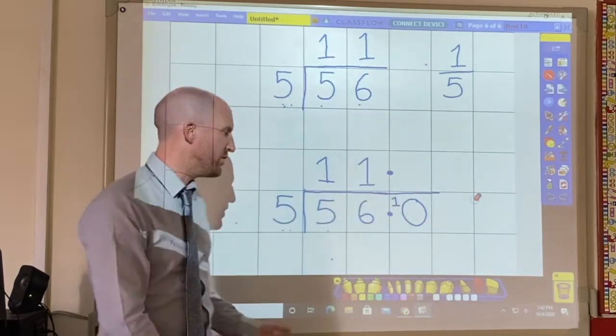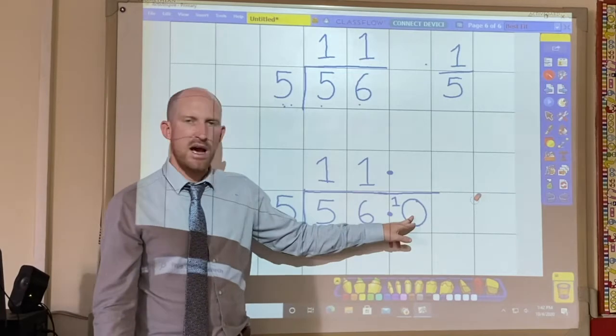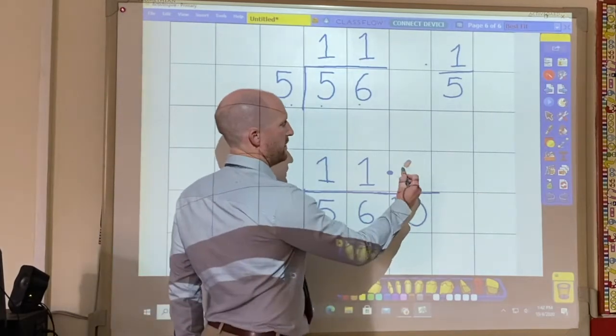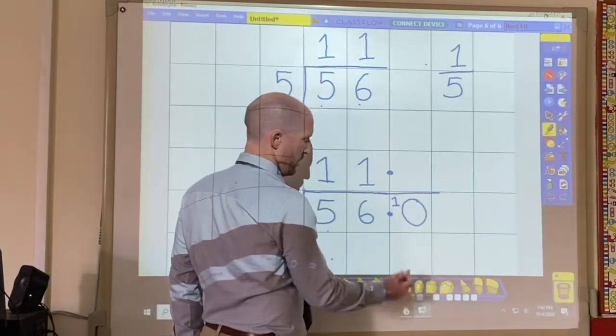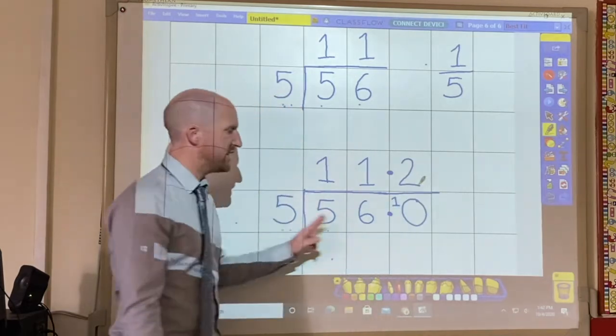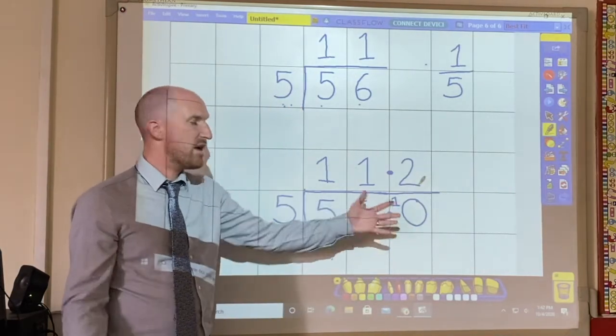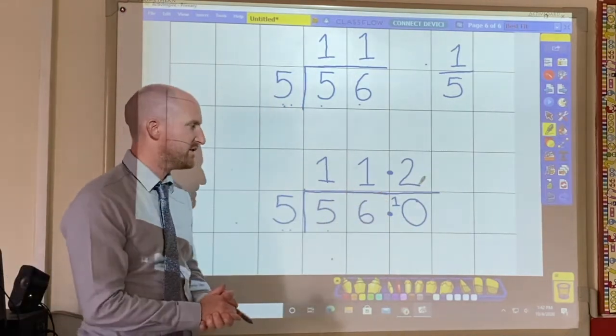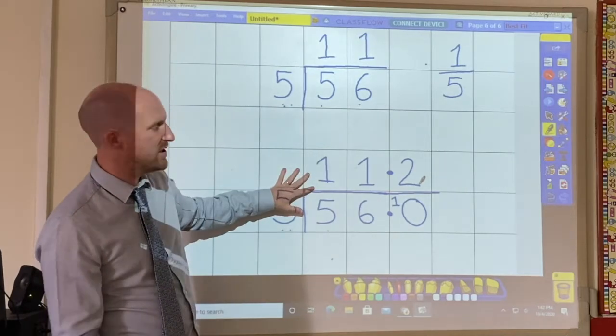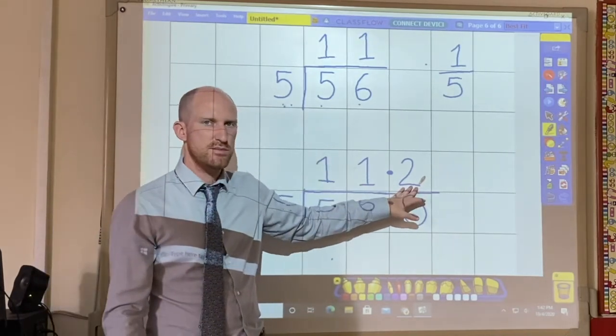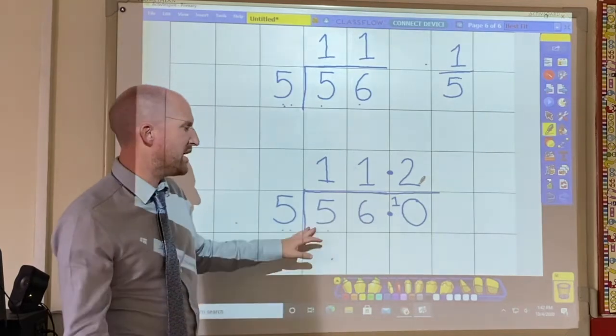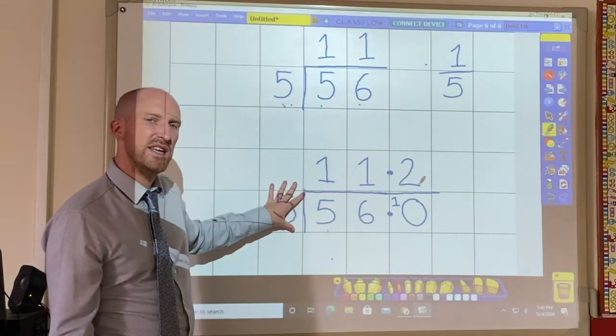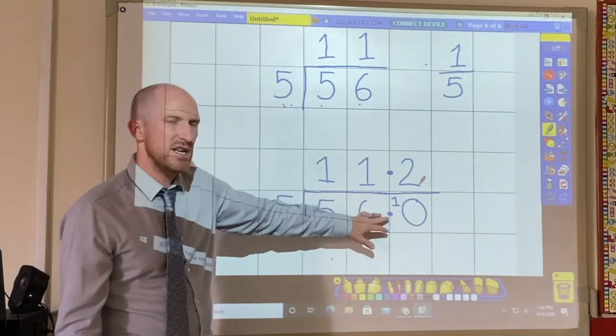And then all you do is say how many 5's are in 10. And there are 2 5's in 10. And there are no remainders. So the answer as a decimal is 11.2. I'm just going to show one more example now of dividing and showing your answer as a decimal.